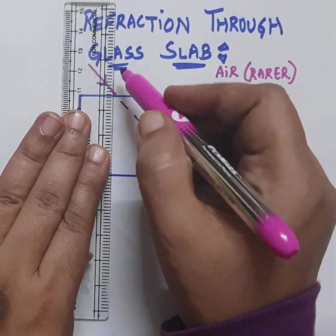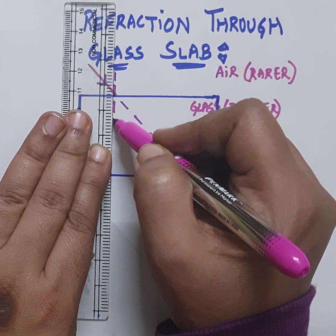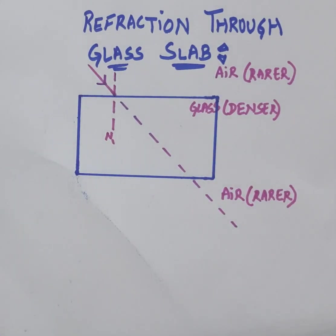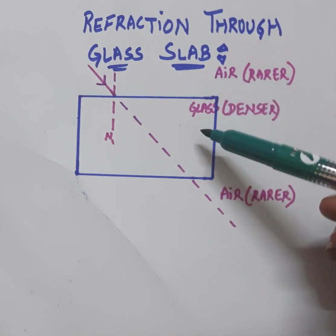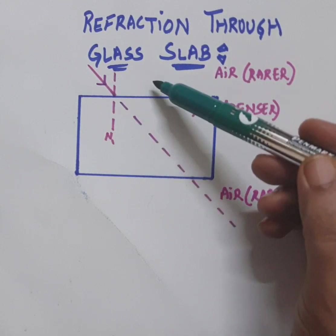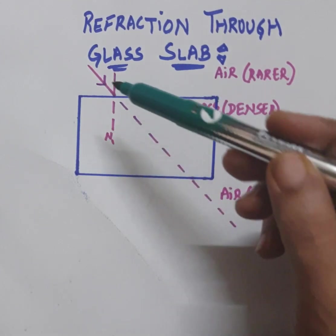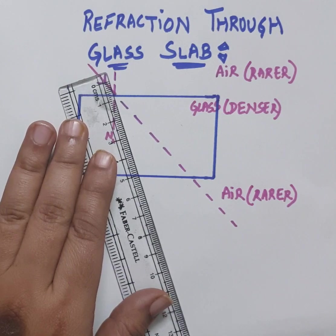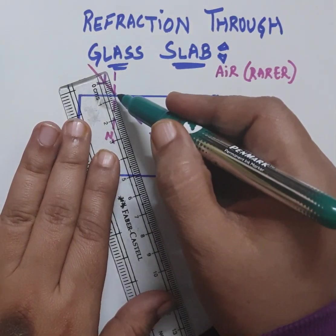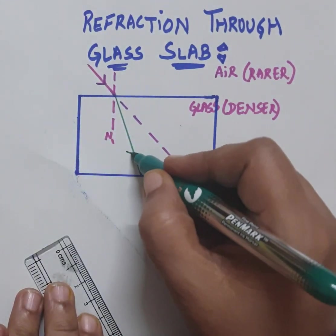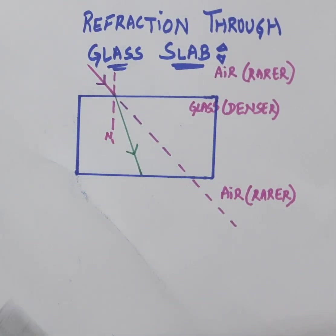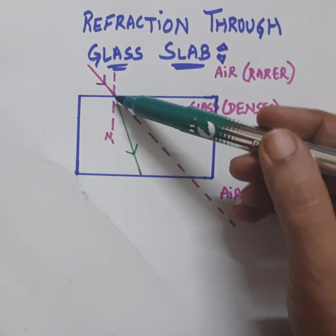This is normal number one and this is the incident ray. As it is traveling from the rarer medium to the denser medium — air into glass — the ray will not go straight but will bend towards the normal. I am drawing the refracted ray here. Again at the exit point there will be refraction, so the bending of light occurs two times.